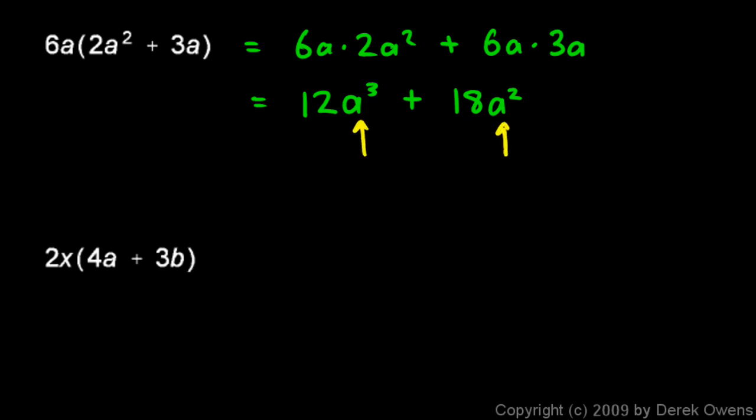Now we can't combine these two terms — they are not like terms. The a cubed and the a squared are different. We can only combine like terms when they have exactly the same variable part, and a cubed and a squared are different.